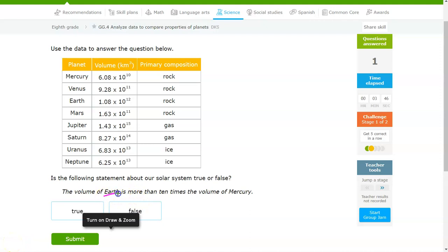So for this one, we're going to look at the volume of Earth and the volume of Mercury and whether Earth is more than 10 times the volume of Mercury. So Mercury is 6.08 times 10 to the 10. We know that Earth is 1.08 times 10 to the 12. Once again,